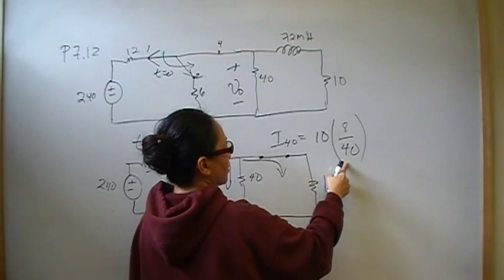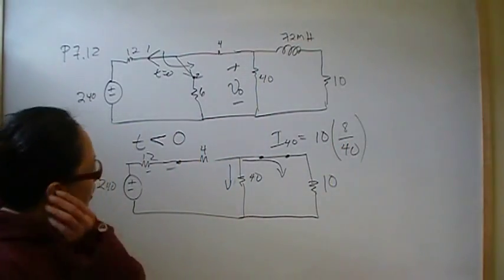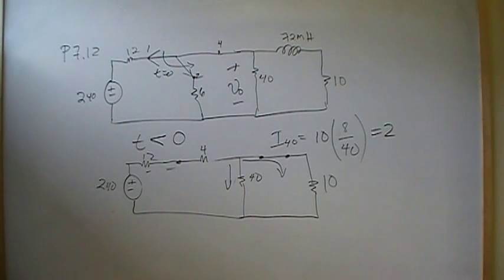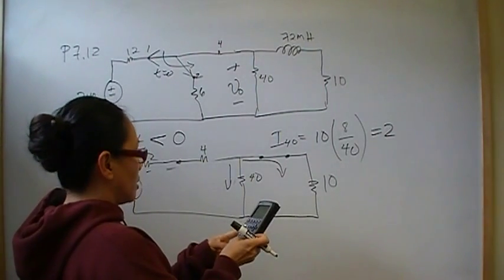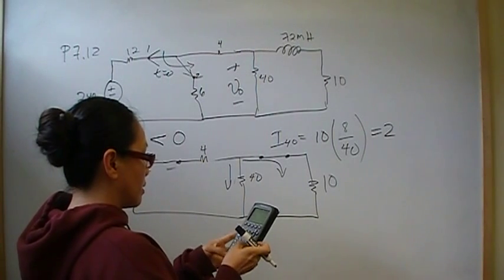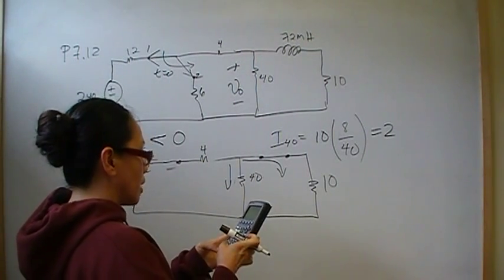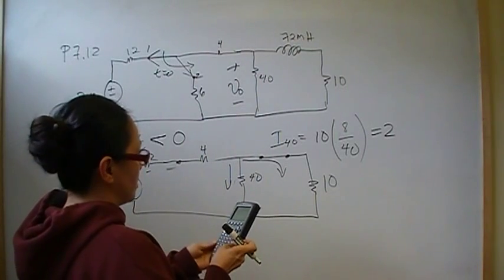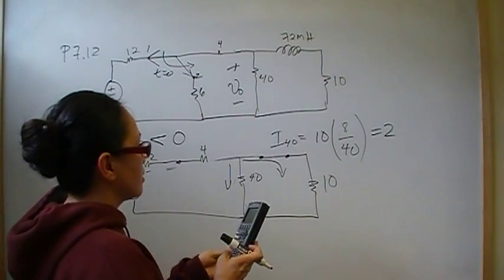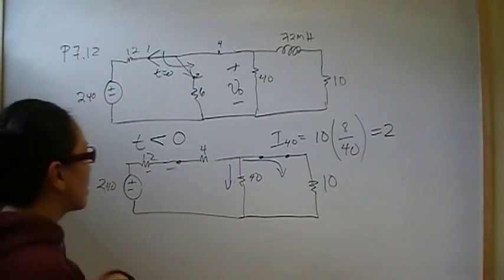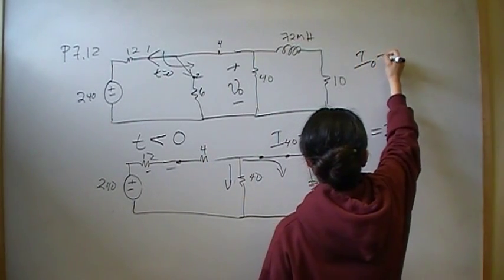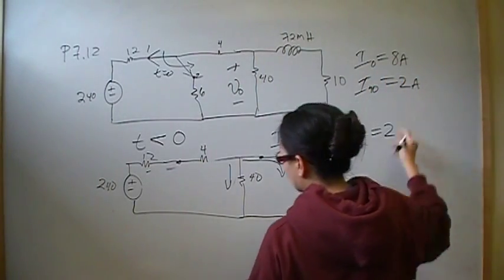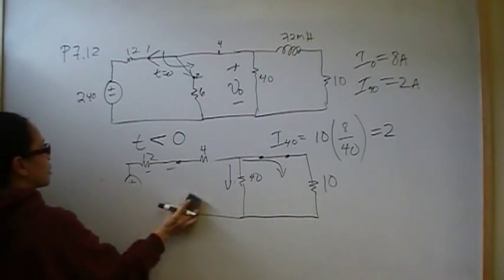So then the 10 amps, so the I-40 is going to be 10 amps times 8 over 40. So that's going to be 1 fourth. So 1 fourth of 8 is 2, so we've got 2 amps, 2 amps going through the 40 at times 0. Oh, wait, you know what? It's never a good idea for me to do this in my head. So I-40, it is 2, so then 8 divided by 10 times 10 is 8. Okay, so then the current going through the inductor is I-naught. That's going to be 8 amps, so I-40 is 2 amps. Okay, so now let's take a look at what happens when the switching happens. So that's all the initial condition.